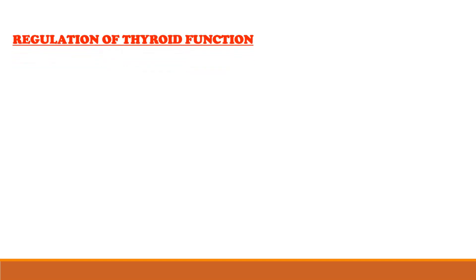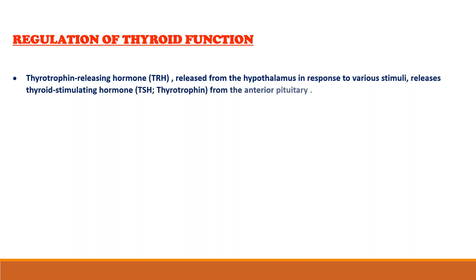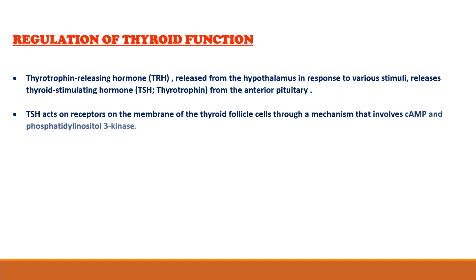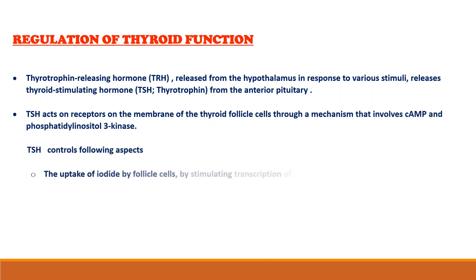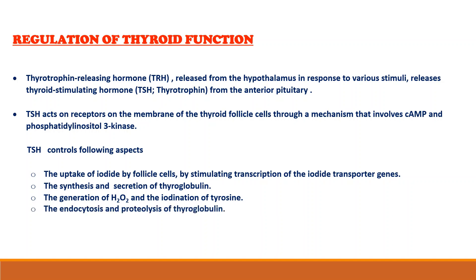Now let's move on to regulation of thyroid function. Thyrotrophin-releasing hormone released from the hypothalamus in response to various stimuli releases thyroid-stimulating hormone from the anterior pituitary. TSH acts on receptors on the membrane of the thyroid follicle cells through a mechanism that involves cyclic AMP and phosphatidylinositol-3-kinase. TSH controls the following aspects: the uptake of iodide by follicle cells by stimulating transcription of the iodide transporter genes, the synthesis and secretion of thyroglobulin, the generation of H2O2, and the iodination of tyrosine.